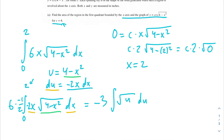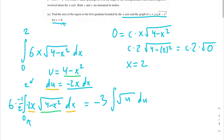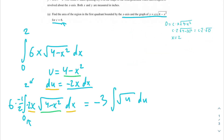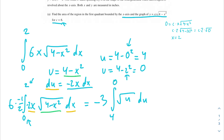We also change the bounds. Plugging x equals 0 into u equals 4 minus x squared gives u equals 4. Plugging x equals 2 gives u equals 0. So the new bounds run from 4 to 0 — make sure you don't autopilot and put 0 on the bottom and 4 on top, because we're now integrating with respect to u, not x.